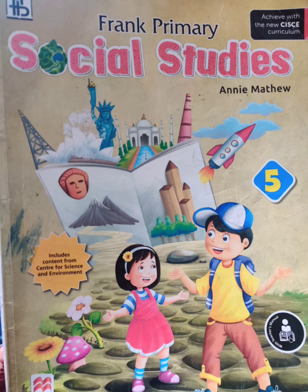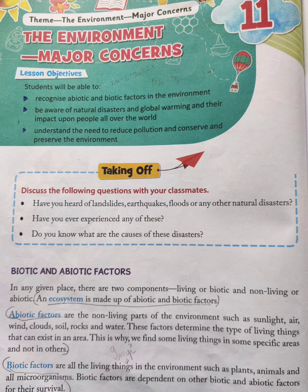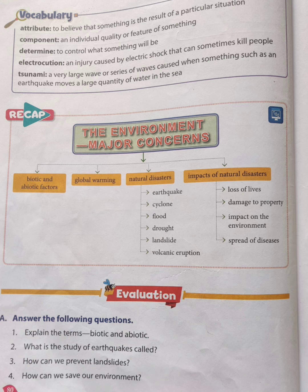Hello children, today I am going to read question answers and back exercise of chapter 11 from the book Frank Primary Social Studies for Class 5. The name of the chapter is The Environment: Major Concern. Let's start with question answers and back exercise.